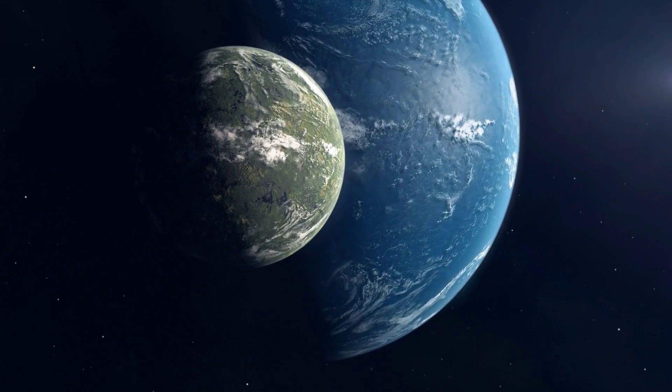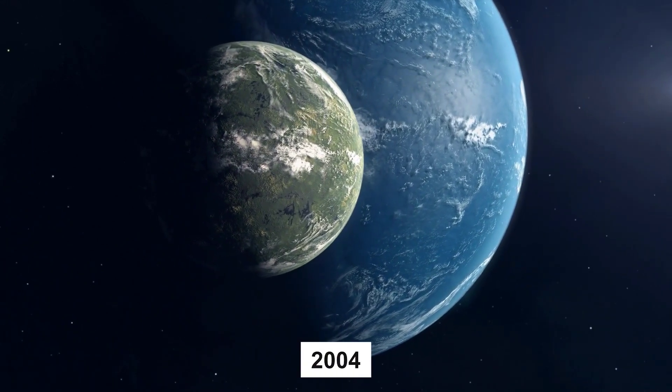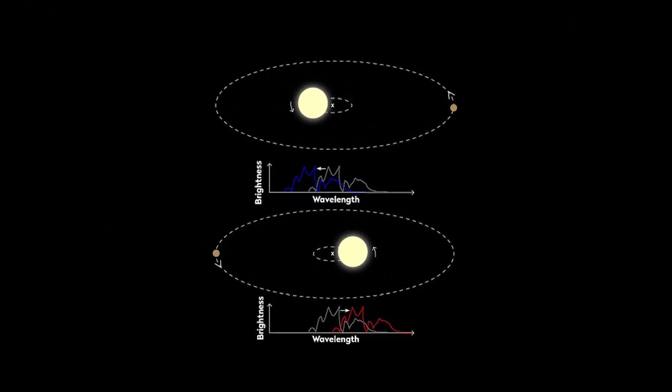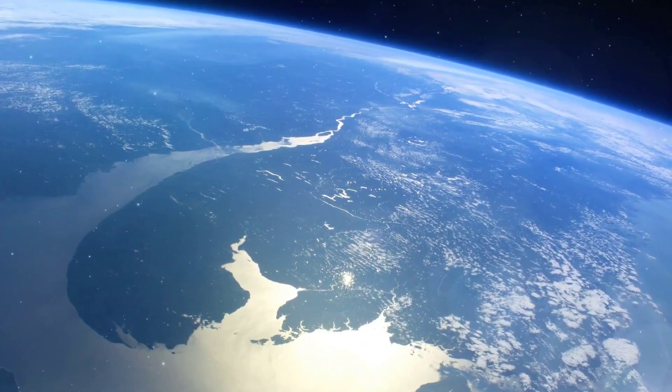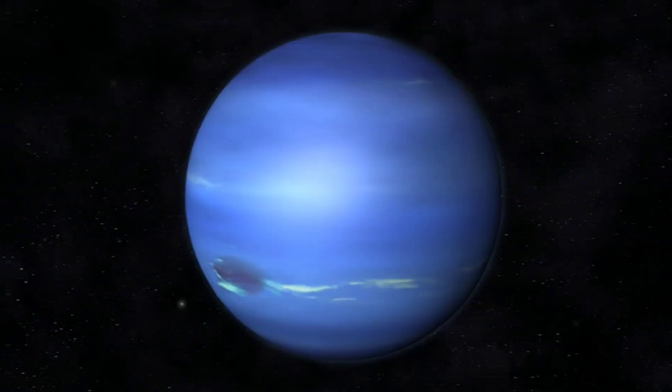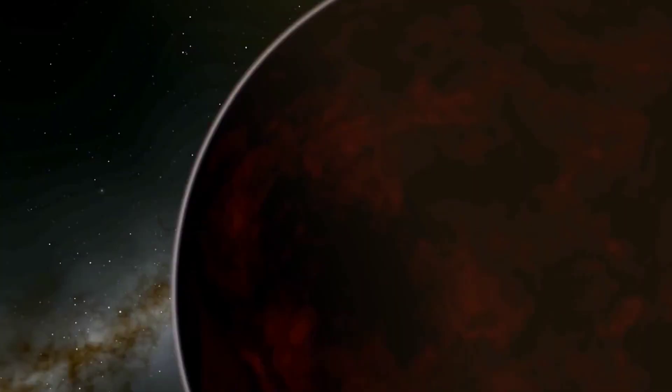This super-Earth, discovered in 2004 by a team of astronomers using the radial velocity method, which detects the wobbling motion of the star that is caused by the gravitational pull of its planets, is larger than Earth in both size and mass, but smaller than Uranus and Neptune. The estimated radius of 55 Cancri e is about twice that of Earth, while its mass is approximately eight times greater.